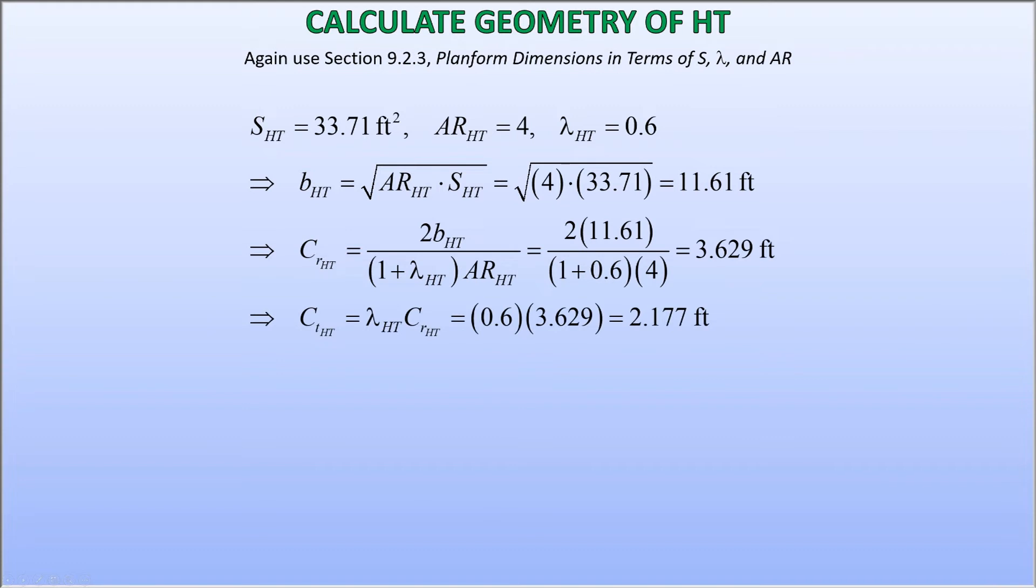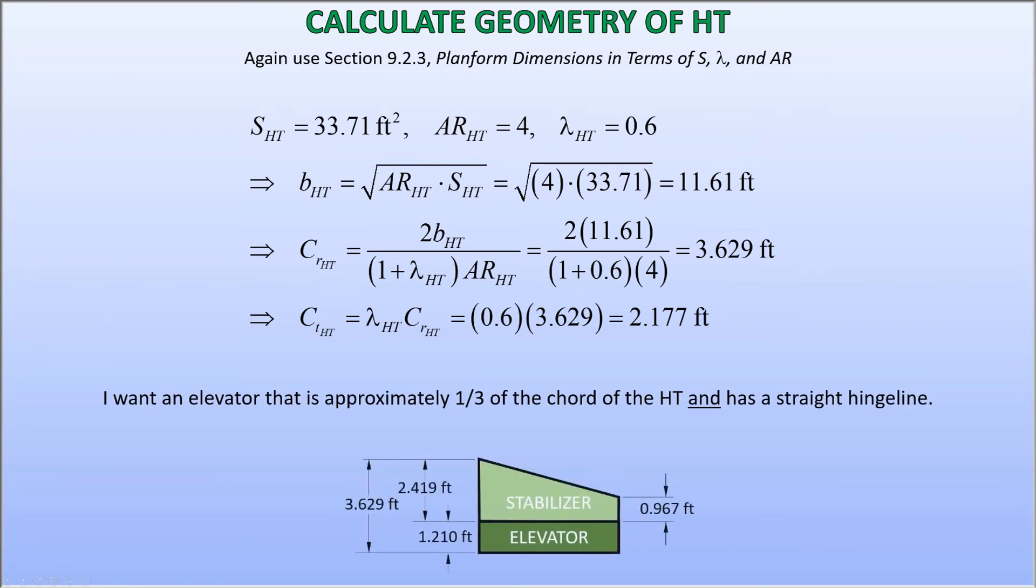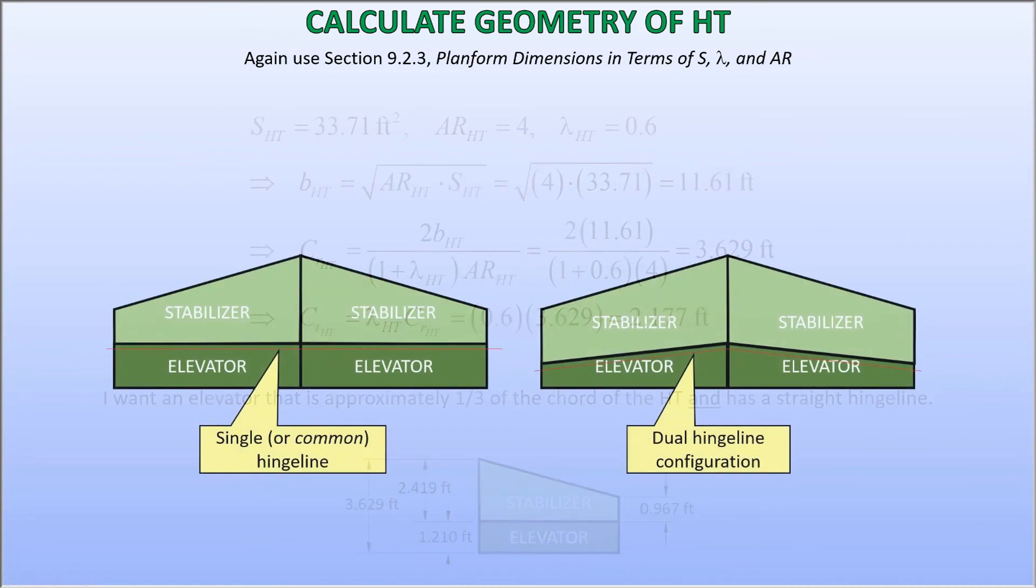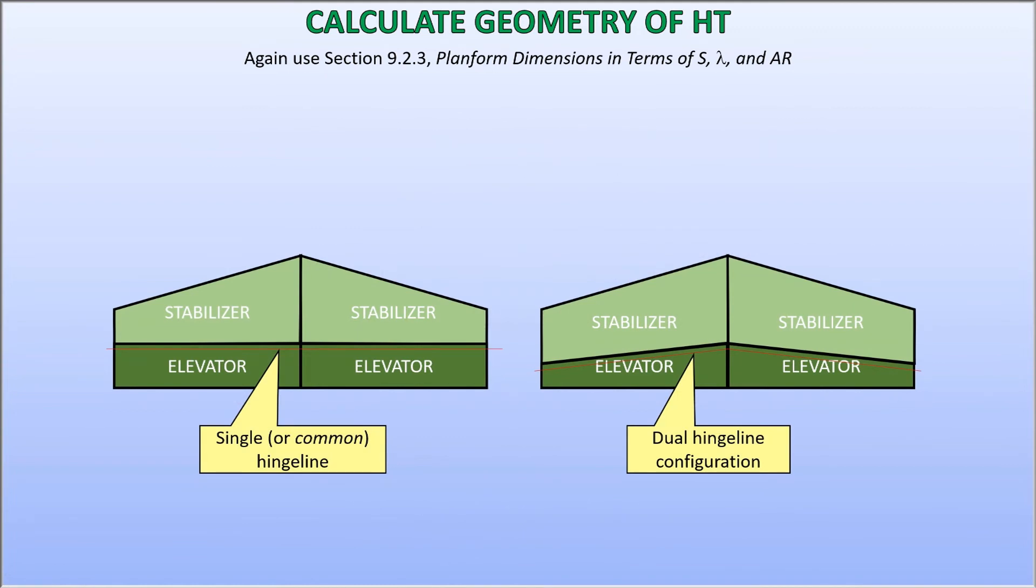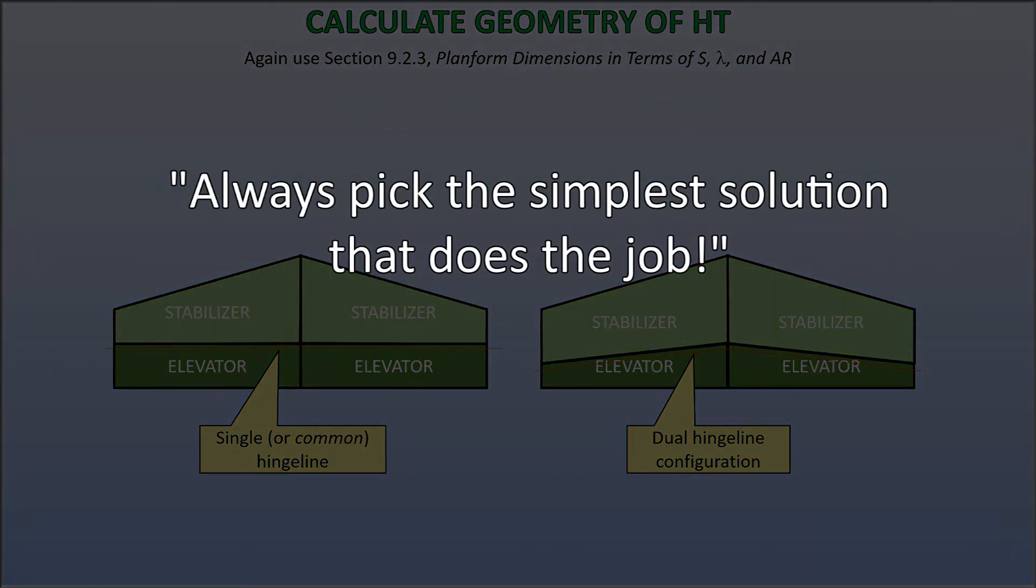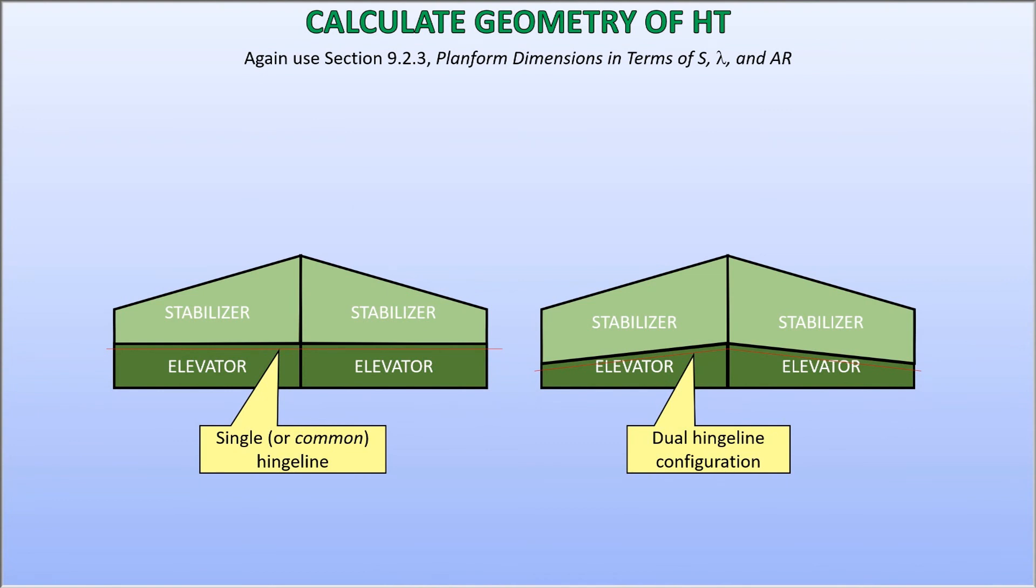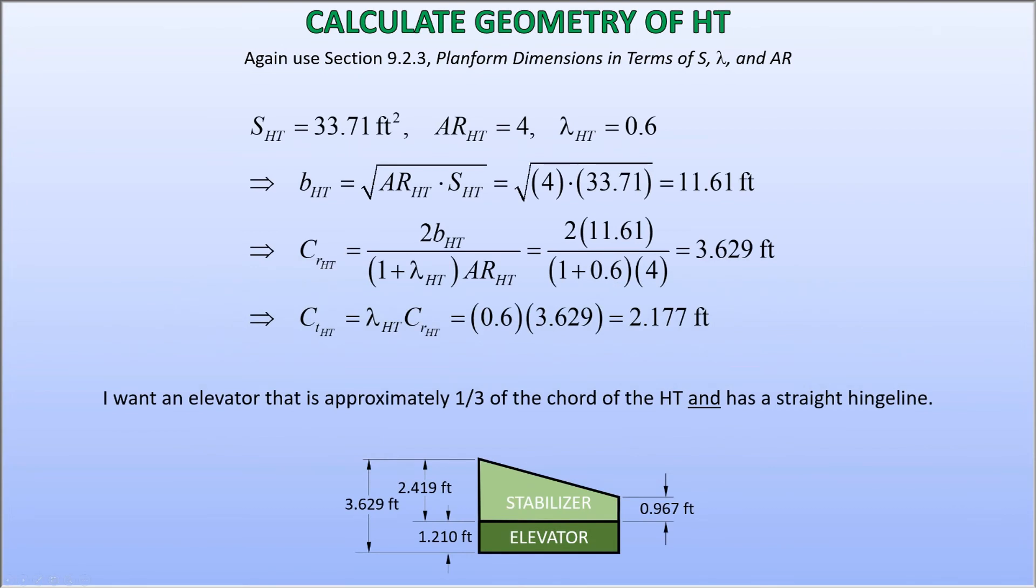I'm also going to consider a dedicated stabilizer and elevator configuration. I want an elevator that is approximately one-third of the chord of the horizontal tail and has a straight hinge line. It goes without saying that it is the designer's prerogative to control the geometry. Here we want to look ahead and think about manufacturing. It turns out that manufacturing an elevator with a single or common hinge line is much easier than if one insists on a dual hinge line configuration. A common hinge line results in a simple and direct connection between the left and right elevators. It satisfies the engineering adage, always pick the simpler solution that does the job.